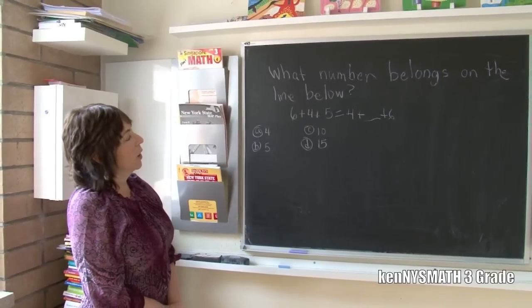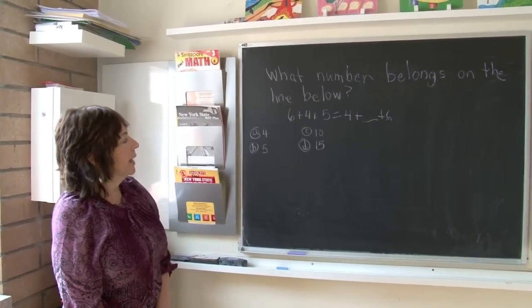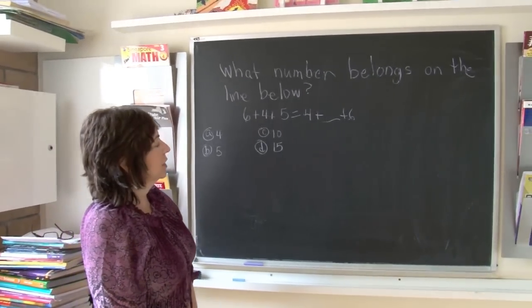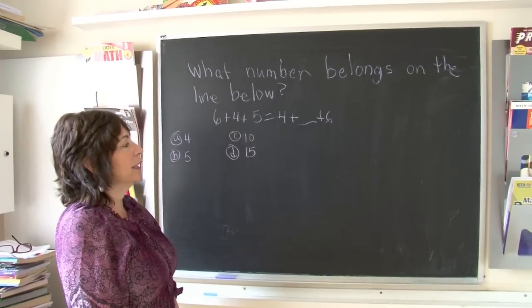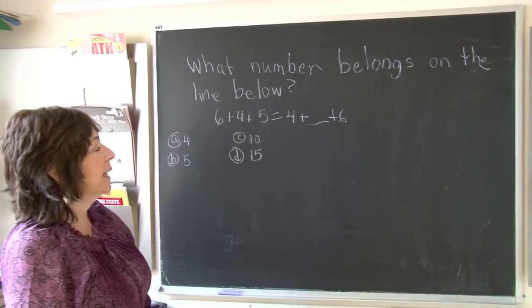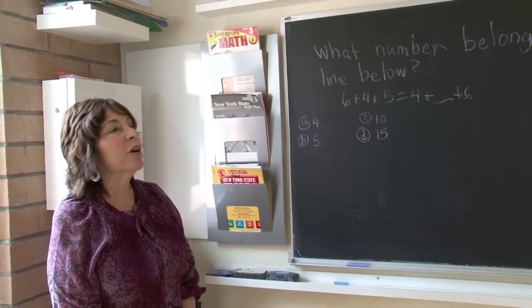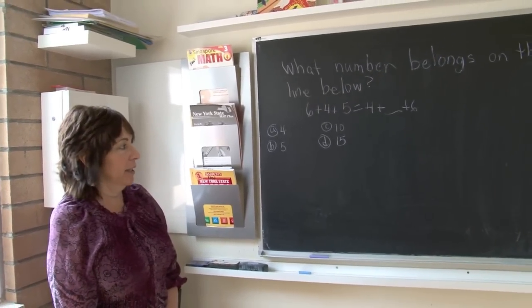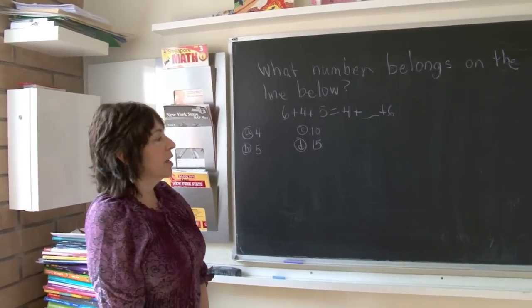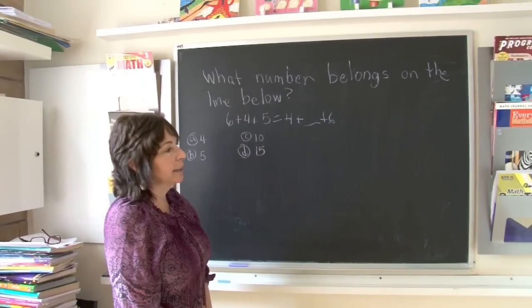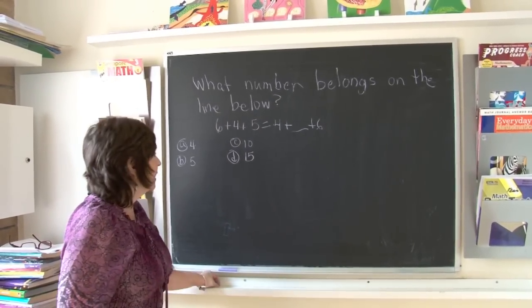What number belongs on the line below? It says 6+4+5 = 4+___+6. Boys and girls, this is called the commutative property of addition. The order of the numbers does not matter.